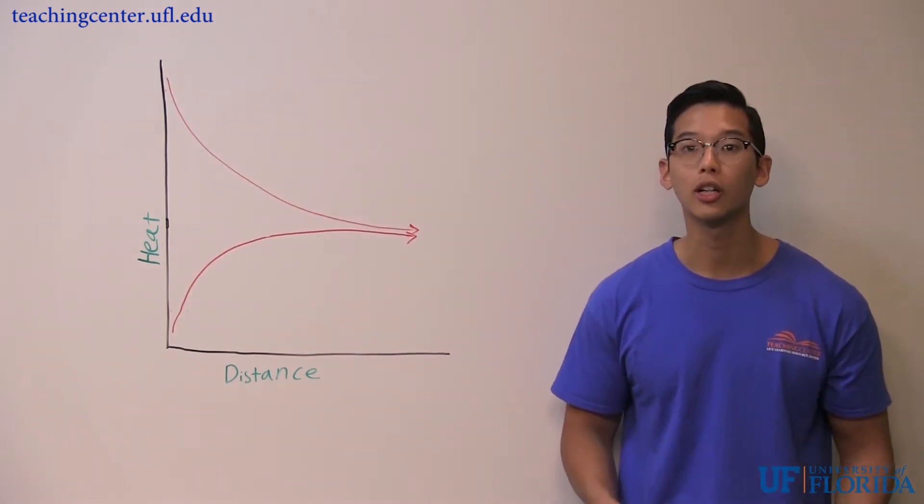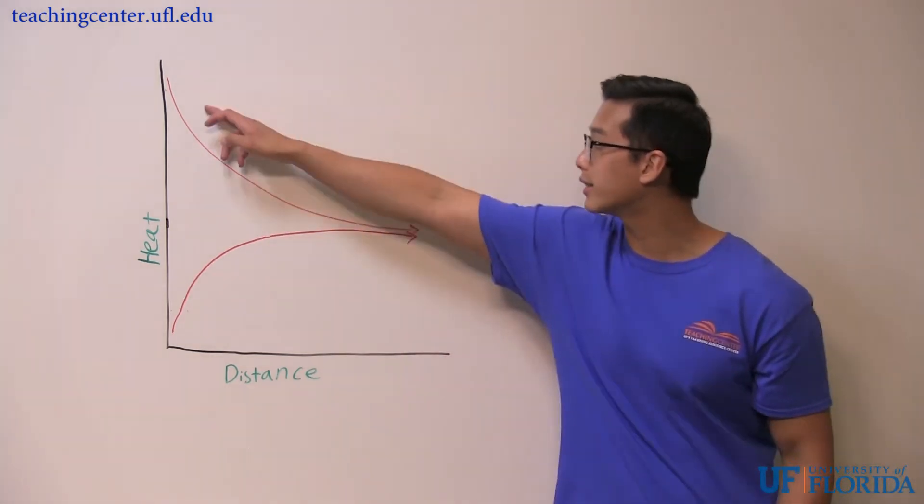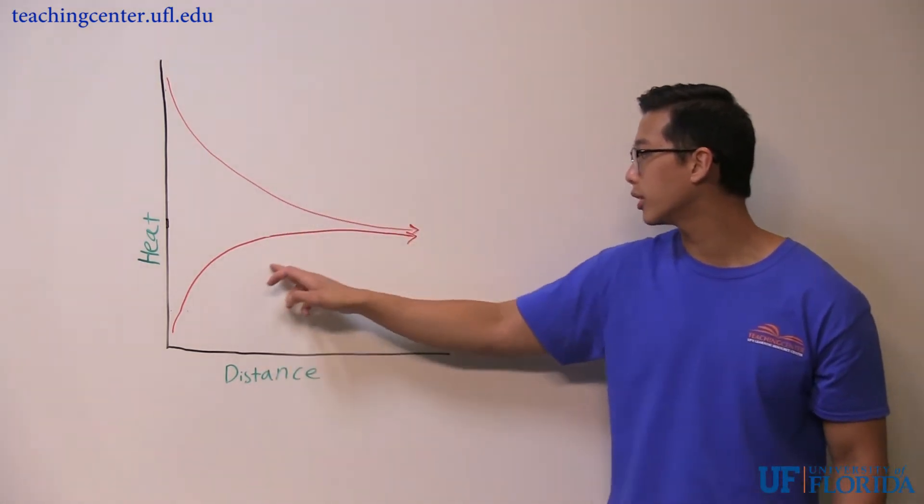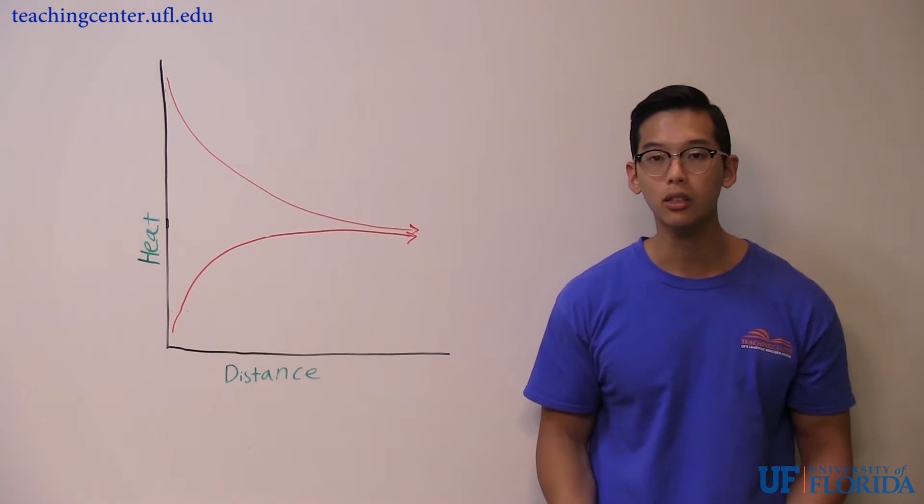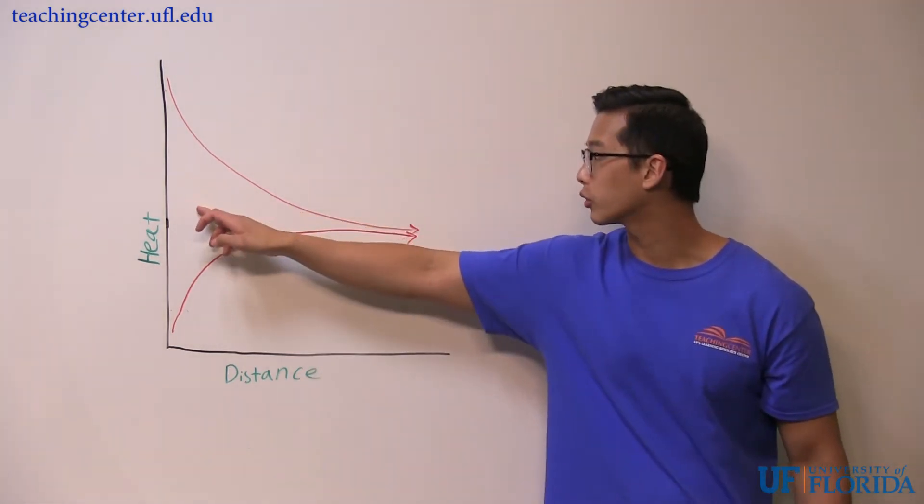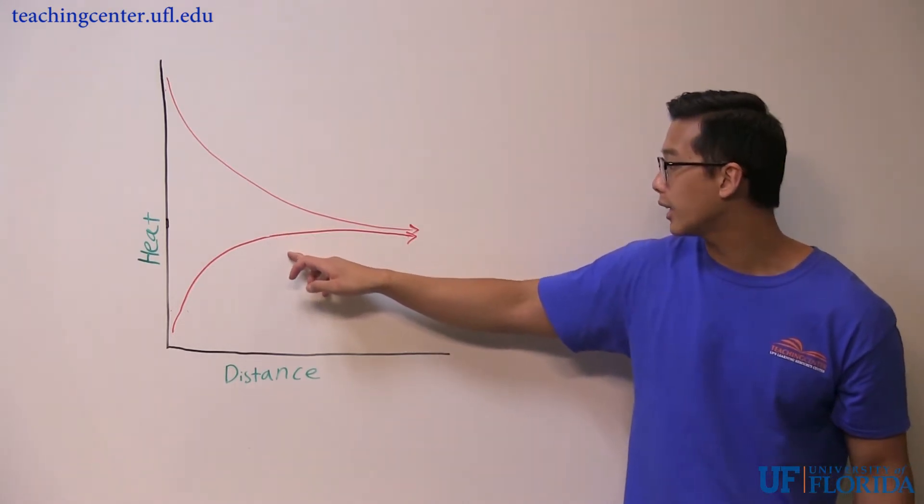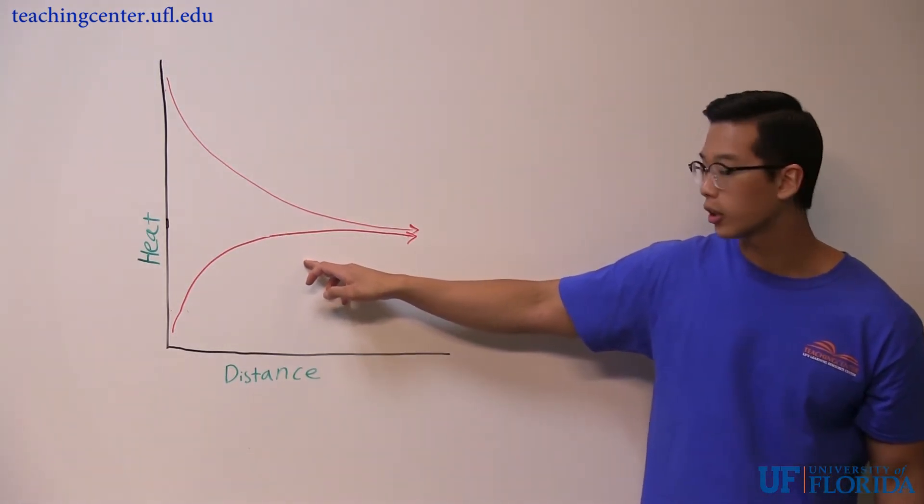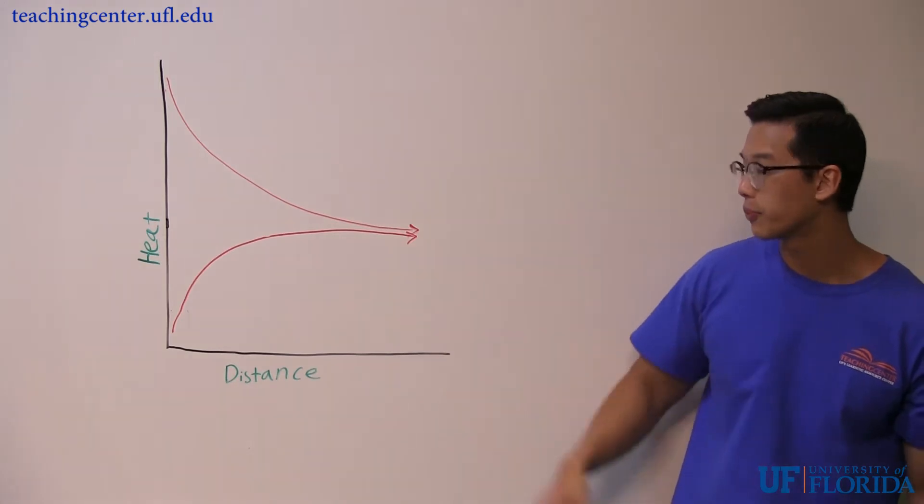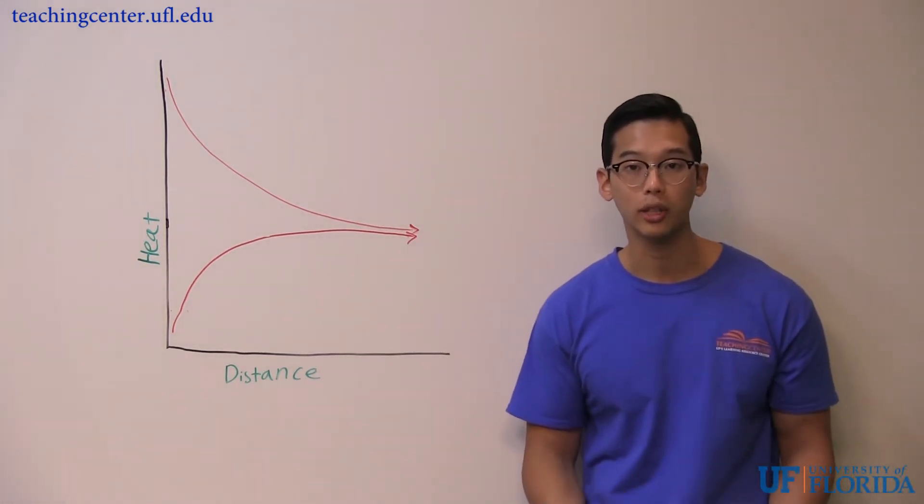Concurrent flow occurs when vessels are flowing in the same direction in close proximity to each other. If we look at our graph, notice how both vessels quickly reach equilibrium early on, and this prevents any further heat transfer from occurring along the rest of the blood vessel, since there is no concentration gradient.